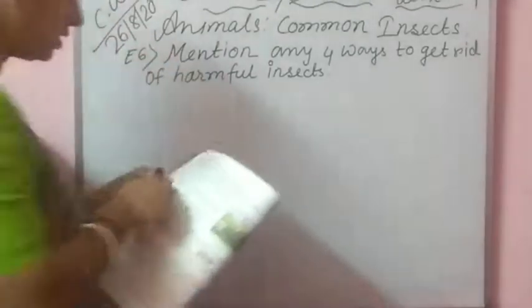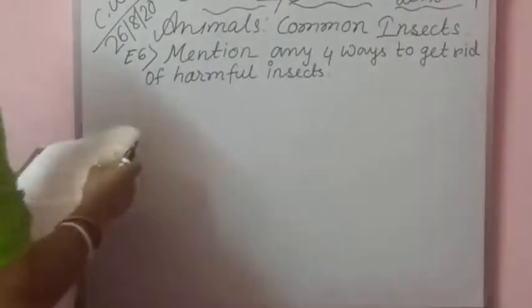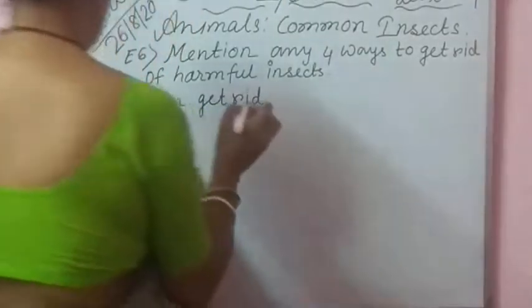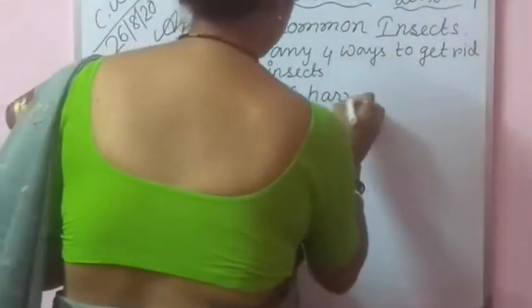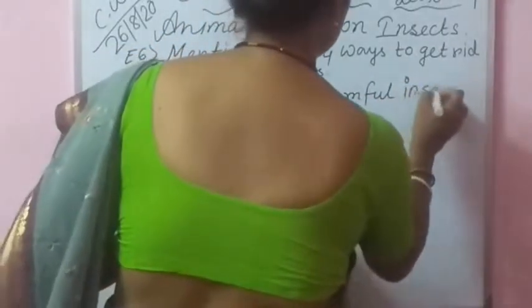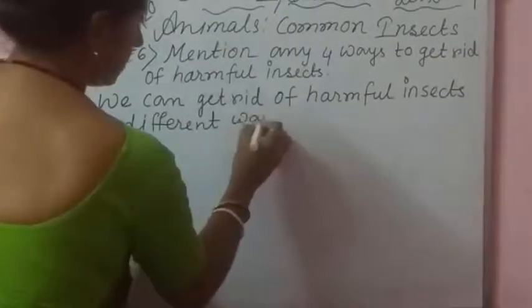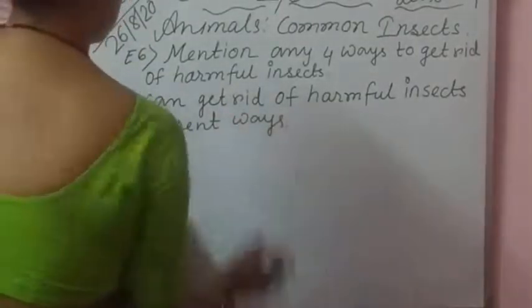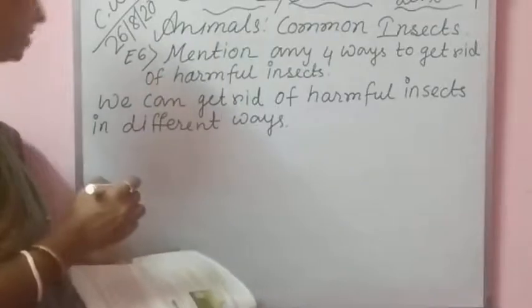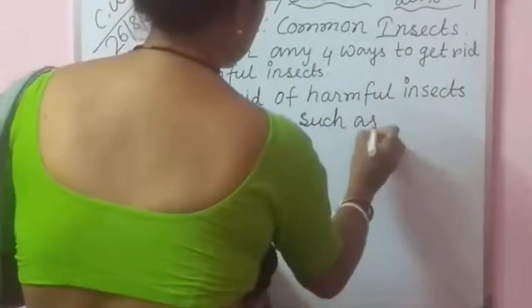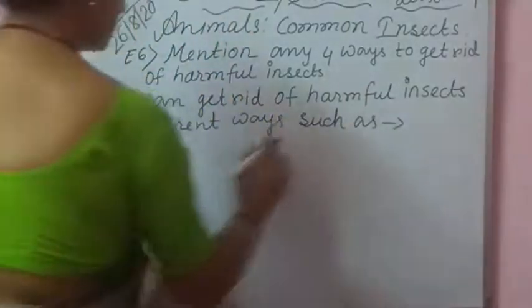Everybody look at the board. Number 1. Who can get rid of harmful insects in different ways? We can get rid of harmful insects in different ways. Such as number 1.